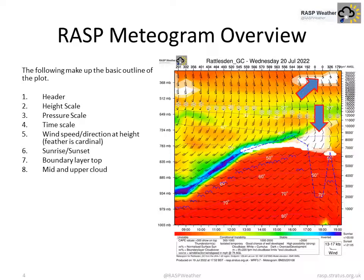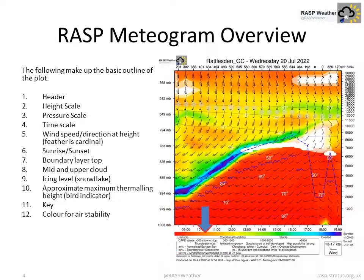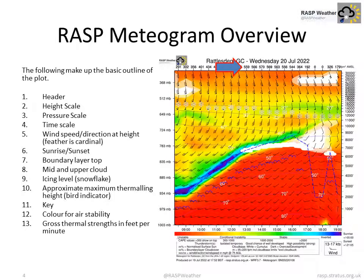Mid and upper cloud, icing level shown as a snowflake, and the approximate maximum thermal height — which looks a bit like a little bird indicator. Also shown is the key for the plot, the colour for air instability or stability, and the gross thermal strength in feet per minute.